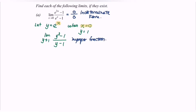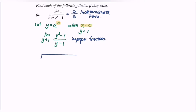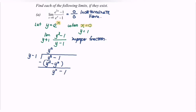In order to make it a proper fraction, we use long division. We divide y cubed minus 1 by y minus 1. First term: y squared, giving y cubed minus y squared. Subtracting leaves y squared minus 1. Next term: positive y, giving y squared minus y. Subtracting leaves y minus 1. Final term: plus 1, giving y minus 1, and the remainder is 0.